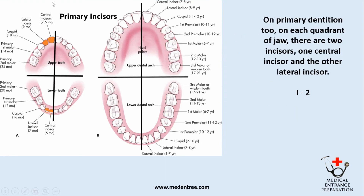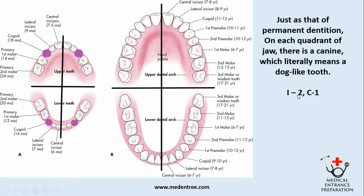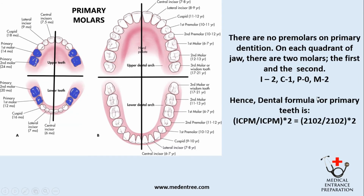Now let's see the formula for primary teeth. There are two primary incisors on each quadrant — one central and one lateral — so I equals 2. Similarly, there is one canine just as in the permanent dentition, so C equals 1. There are no premolars in primary dentition. On each quadrant there are two molars, which are later replaced by the first and second premolar in permanent dentition. Other permanent molars will be added distal to the primary second molar.